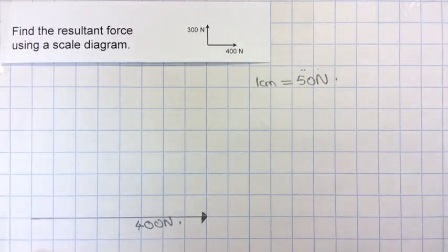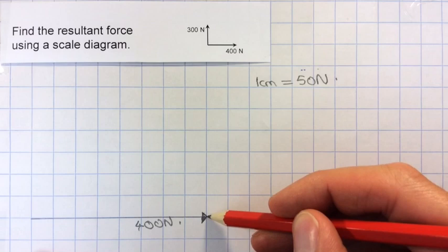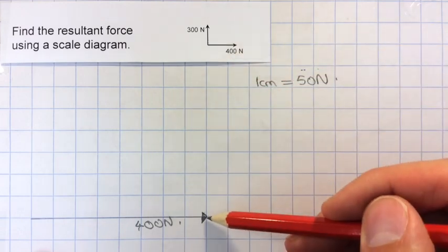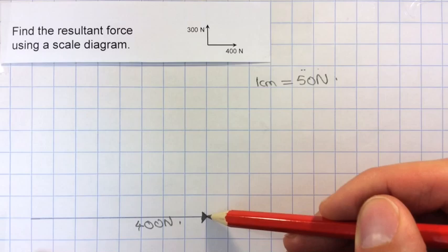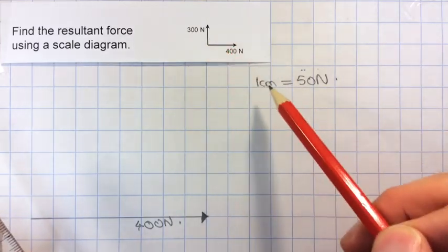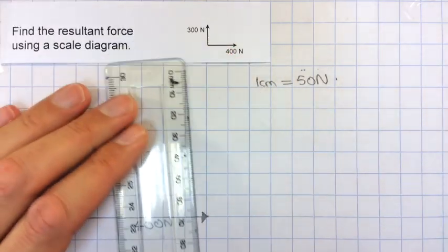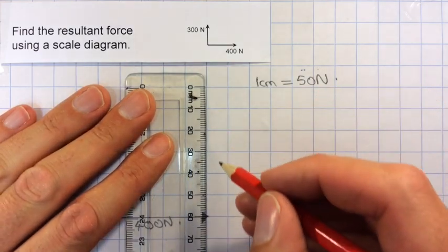Then I'm going to start drawing the other vector, the 300 newtons, from the tip of the last one, where the arrowhead was. And 300 newtons would be 6 centimetres. So I can draw in that.